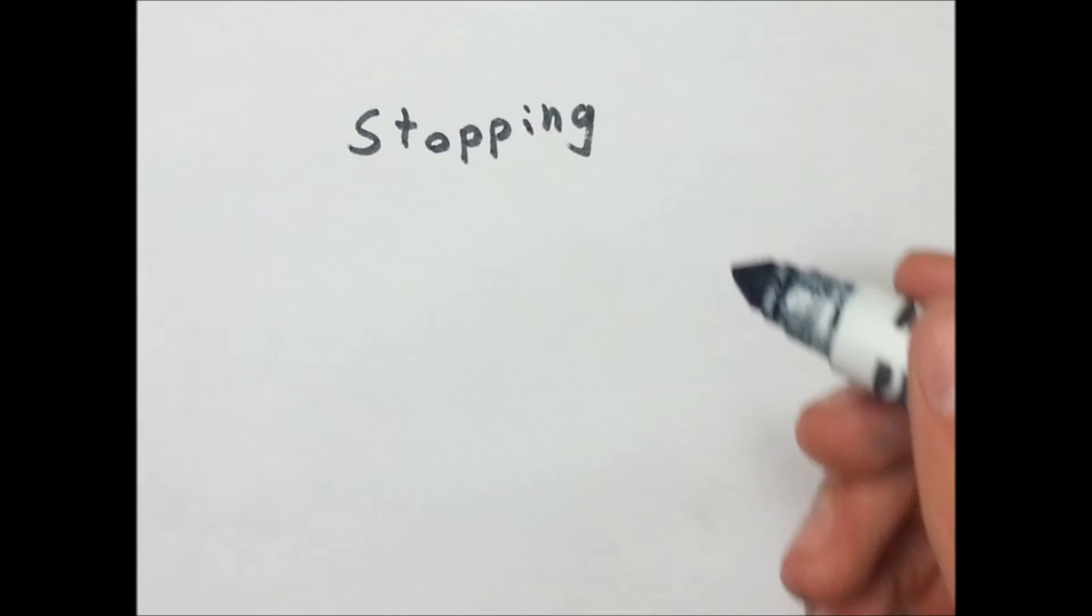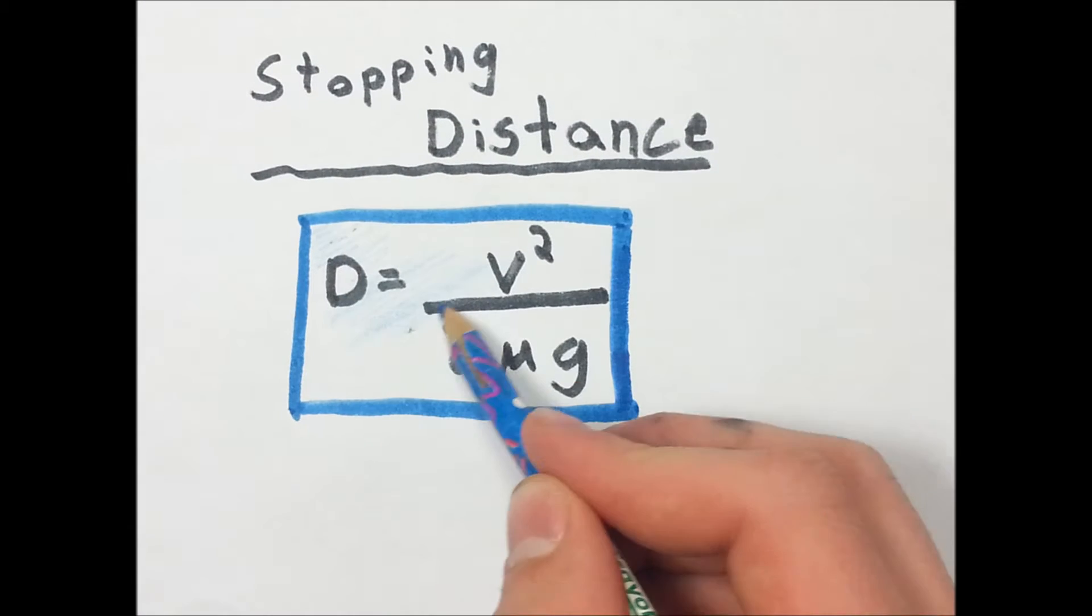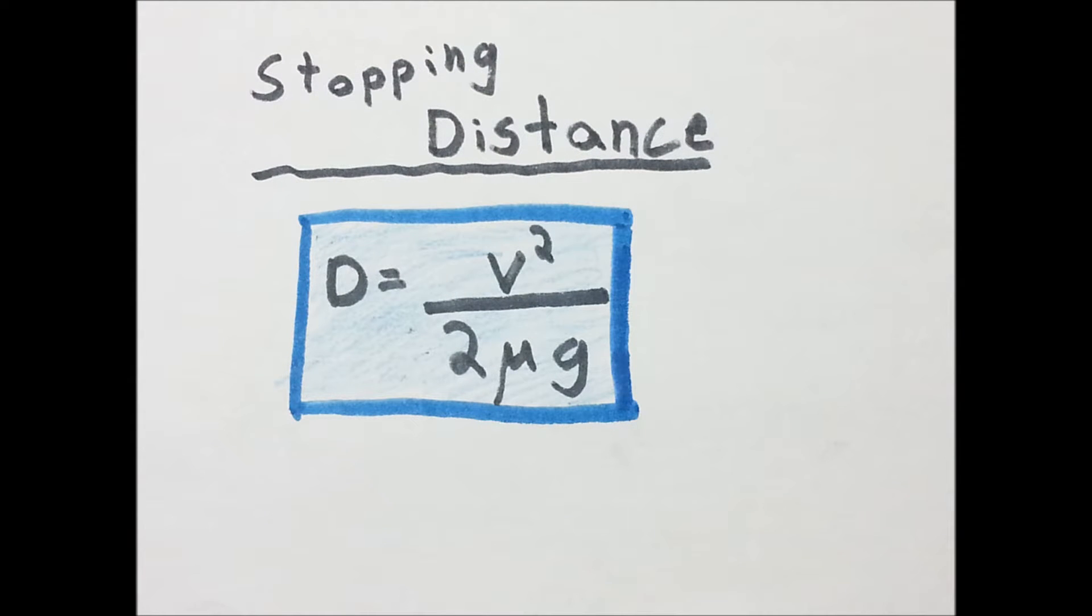The other day I made a simple video on stopping distance. It's about this formula. I did some examples of cars going 60 and 100 kilometers per hour.